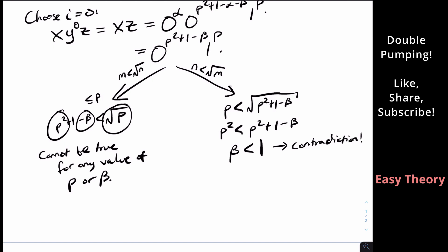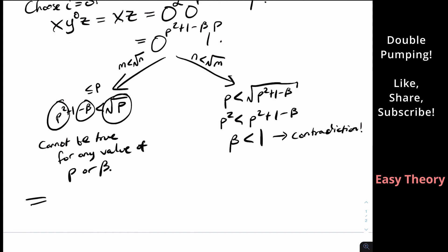So in both cases, we have derived a contradiction. And therefore, L is not regular, since X, Y to the zero Z is not in L.